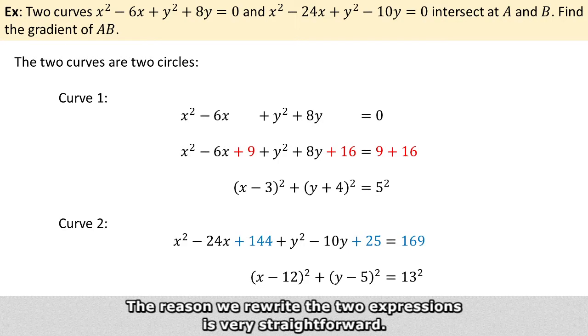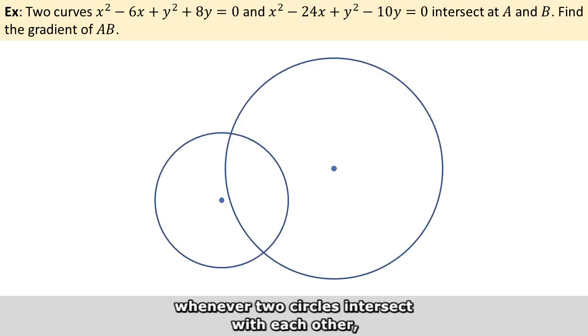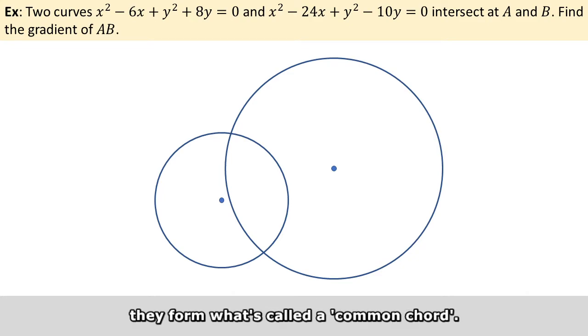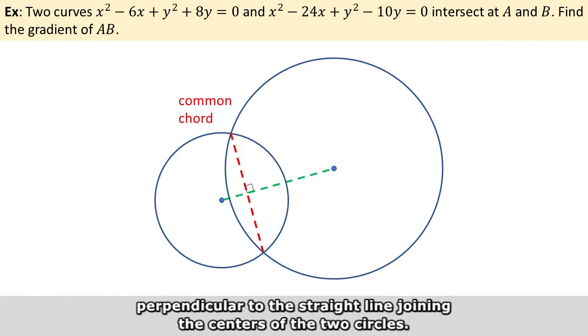The reason we rewrite the two expressions is very straightforward. In 2D coordinate geometry, whenever two circles intersect with each other, they form what's called a common chord. And this common chord will always be perpendicular to the straight line joining the centers of the two circles.